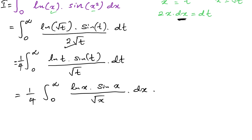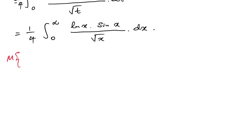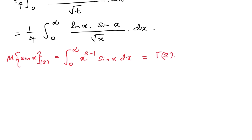Now I'm going to recall the Mellin transform of sine of x. In a previous video we discussed and proved the Mellin transform identity: the Mellin transform of sine of x is the integral from 0 to infinity of x to the s minus 1 times sine of x dx, and this equals gamma of s times sine of pi·s over 2, valid for the absolute value of the imaginary part of s less than 1.